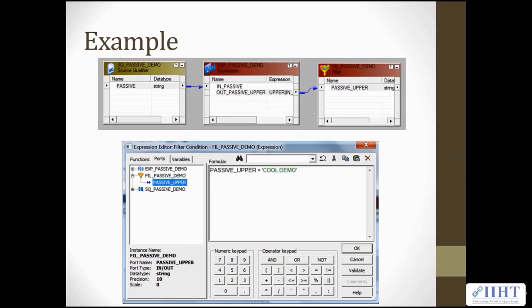Let's observe the below partial mapping. We have a Source Qualifier transformation with one port mapped to a passive Expression transformation. We then perform a quick UPPER function to the port named IN_PASSIVE and map it to an active Filter transformation. Let's take a closer look at our active transformation, the Filter. We have restricted the records coming out of the transformation of values of COOL_DEMO. So any values in this port that do not meet this criteria will be filtered out, reducing our total record count.